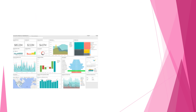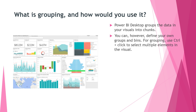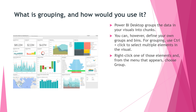What is grouping, and how could you use it? PowerBI Desktop groups the data in your visuals into chunks. You can, however, define your own groups and bins. For grouping, use Ctrl+click to select multiple elements in the visual, right-click one of those elements, and from the menu that appears, choose Group. In the Groups window, you can create new groups or modify existing ones.